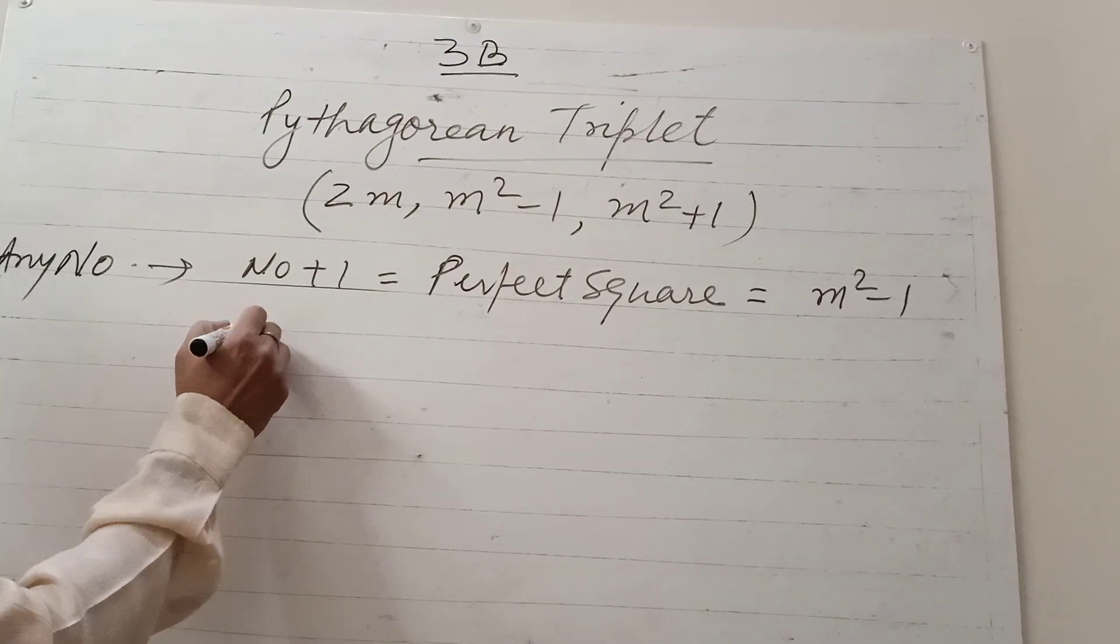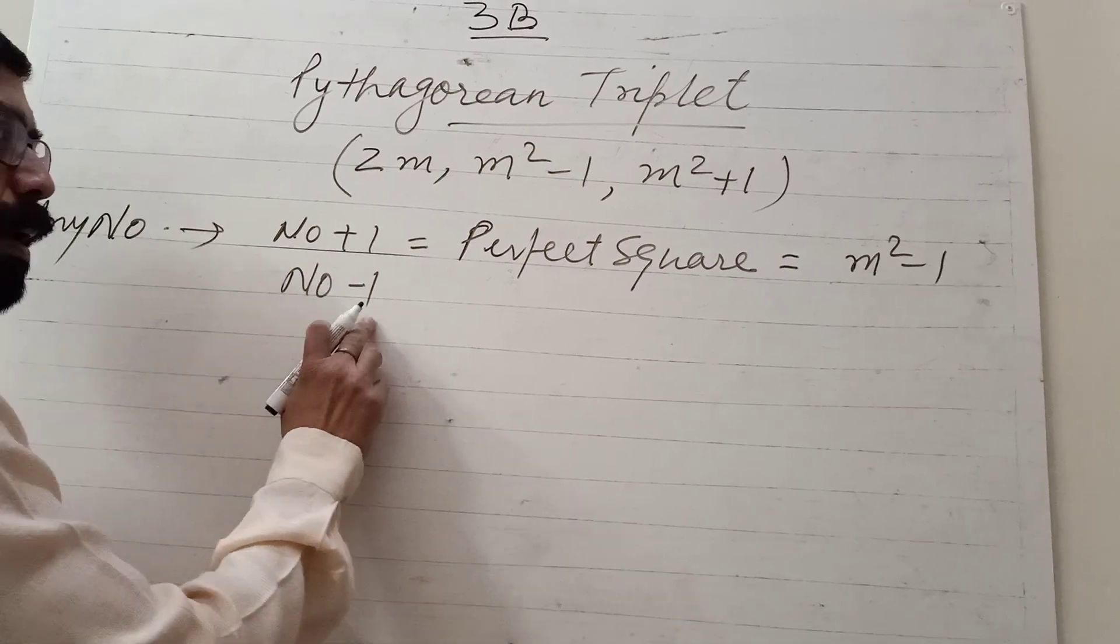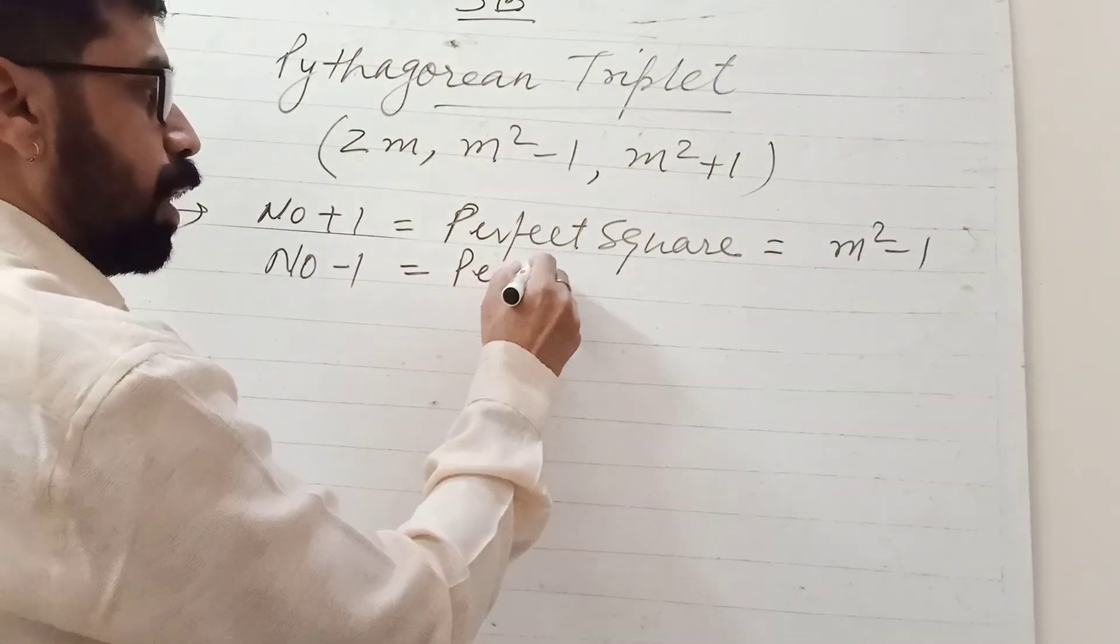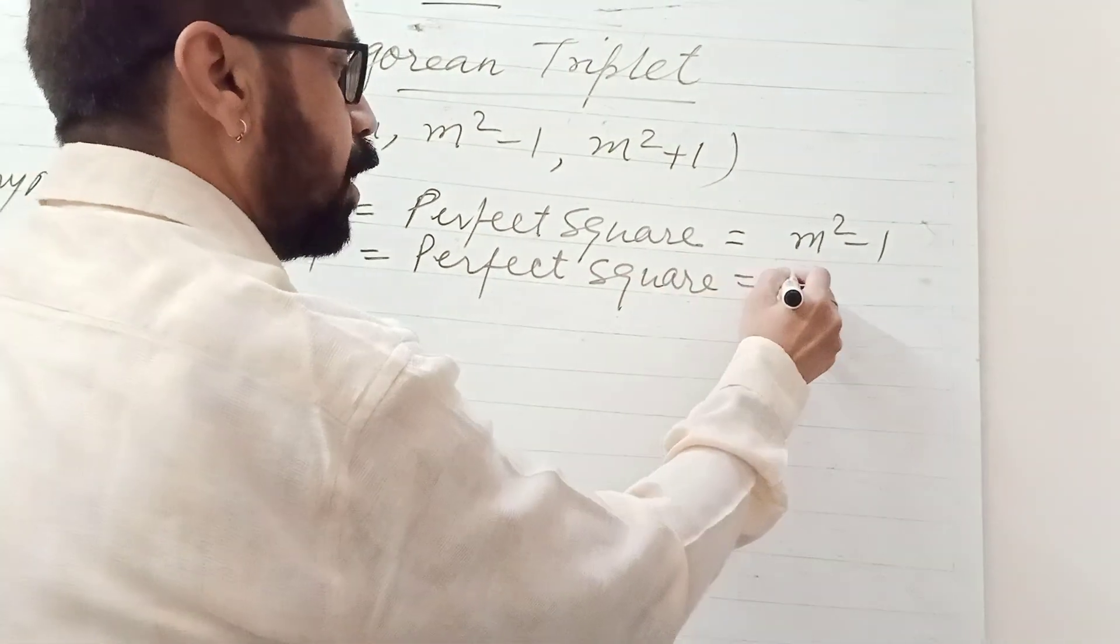Second: if the number minus 1, whatever number is given minus 1, is a perfect square, then this is the value of m² + 1.